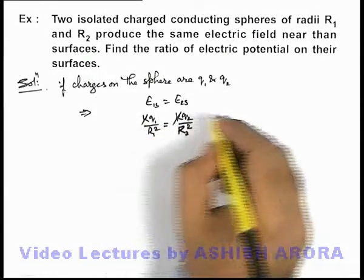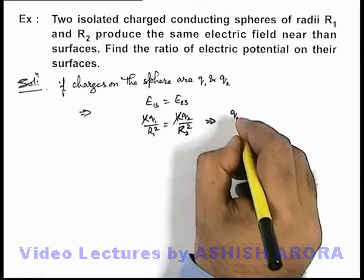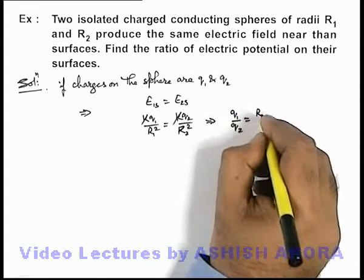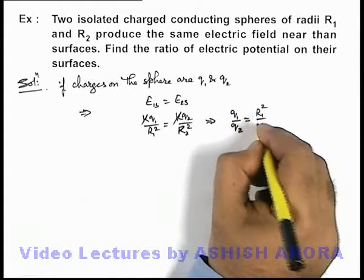Here k gets cancelled out and we get the ratio of charges q1 by q2 is equal to R1 square by R2 square.